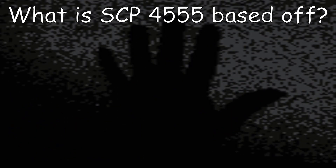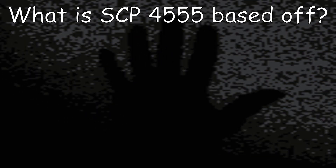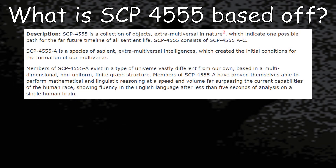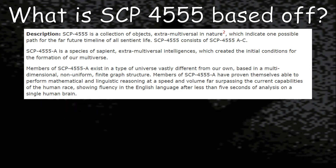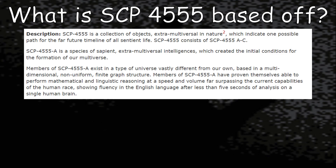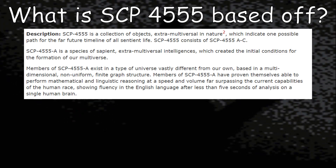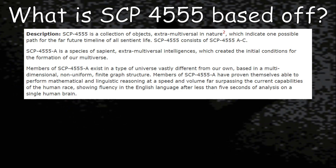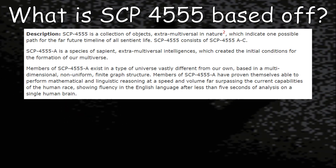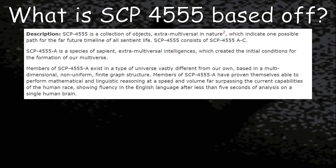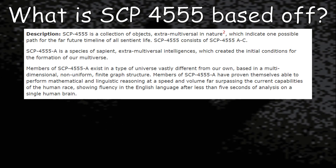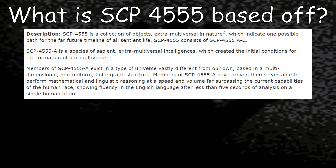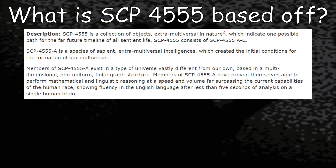Why take my word for it when you can just have it read out from the SCP Wiki itself? Description: SCP-4555 is a collection of objects, extra-multiversal in nature, which indicate one possible path for the far future timeline of all sentient life. SCP-4555 consists of SCP-4555-AC. SCP-4555-AC is a species of sapient, extra-multiversal intelligences, which created the initial conditions for the formation of our multiverse. Members of SCP-4555-AC exist in a type of universe vastly different from our own, based in a multidimensional, non-uniform, finite graph structure.